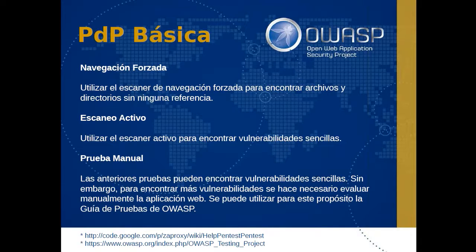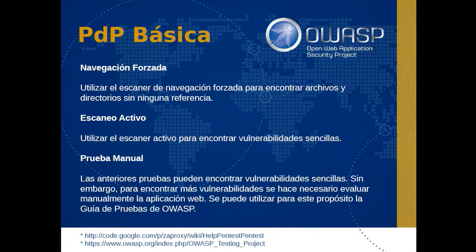Debemos entender cómo estas pruebas son realizadas. Muchas de las vulnerabilidades no pueden ser encontradas de manera automática y se necesita realizar una prueba manual. Las anteriores pruebas no necesariamente encontrarán todas las vulnerabilidades — encontrarán aquellas más factibles y sencillas. Para encontrar más vulnerabilidades, como regla en pruebas de penetración, se debe evaluar manualmente la aplicación web. Para este propósito podemos utilizar la guía de pruebas de OWASP Testing Guide, la cual da un excelente punto de referencia para todas las pruebas a realizar.